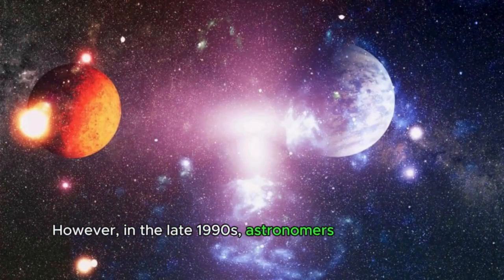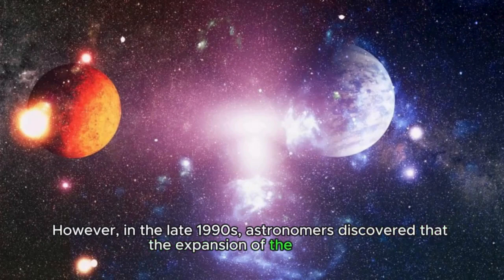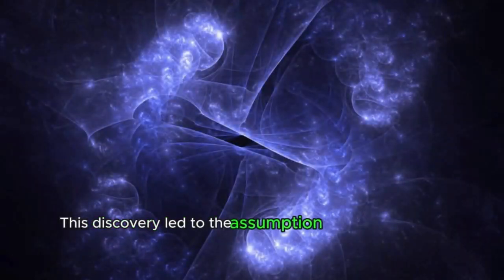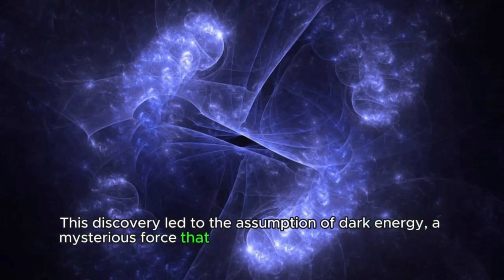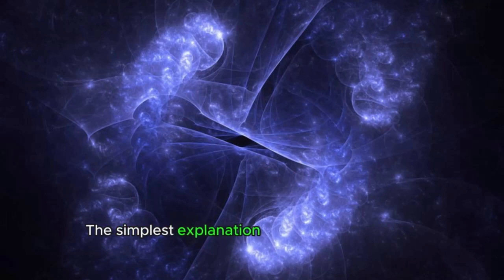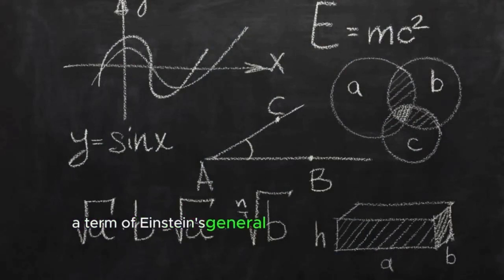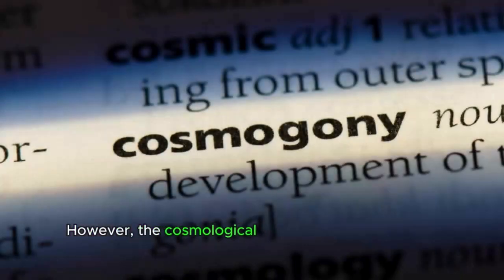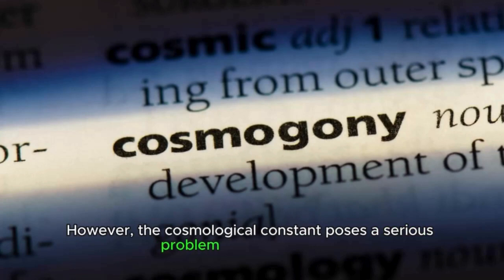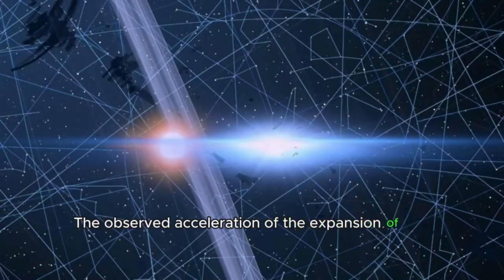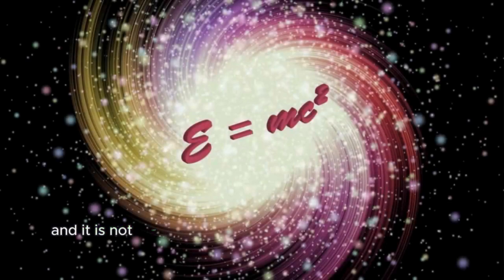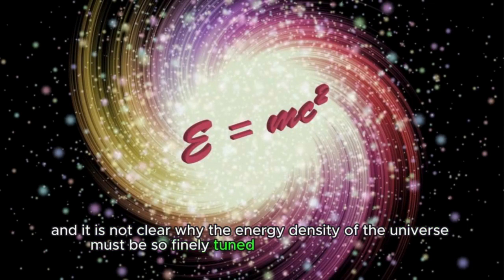However, in the late 1990s, astronomers discovered that the expansion of the universe was actually accelerating, which was completely unexpected. This discovery led to the assumption of dark energy, a mysterious force that accelerates the expansion of the universe. The simplest explanation for dark energy is the cosmological constant, a term of Einstein's general theory of relativity that describes the constant density of energy throughout space. However, the cosmological constant poses a serious problem for cosmologists. The observed acceleration of the expansion of the universe far exceeds that predicted by the cosmological constant, and it is not clear why the energy density of the universe must be so finely tuned to produce this effect.